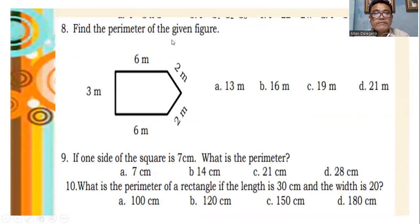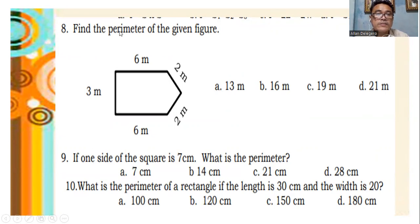Find the perimeter of the given figure. Number 9: if one side of a square is 7 centimeters, what is the perimeter? Number 10: what is the perimeter of a rectangle if the length is 30 centimeters and the width is 20 centimeters? For number 8, the answer is letter C. Number 9 is letter D. And number 10 is letter A.